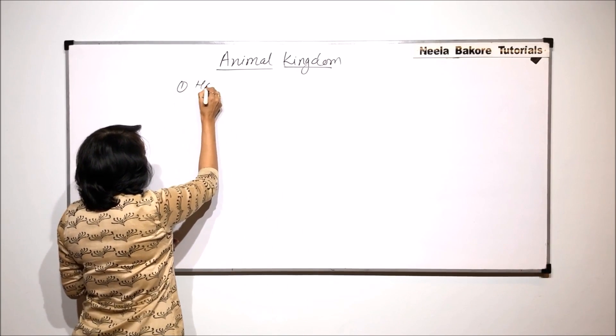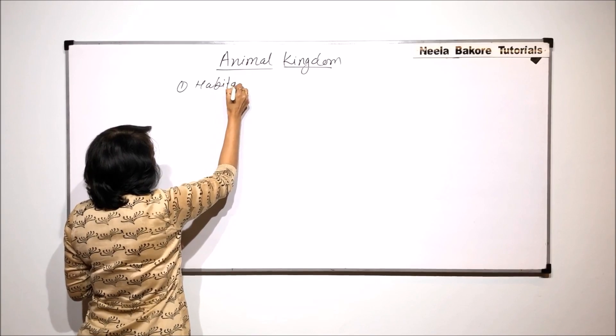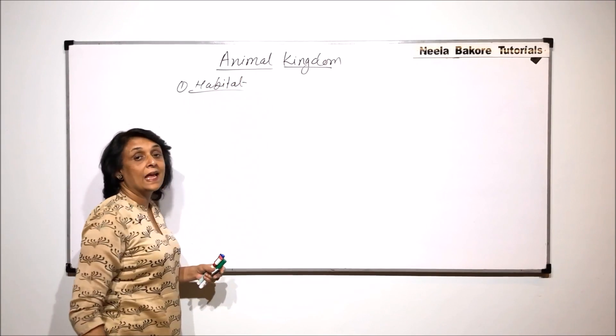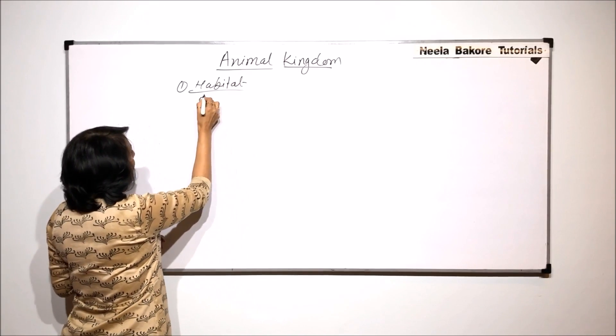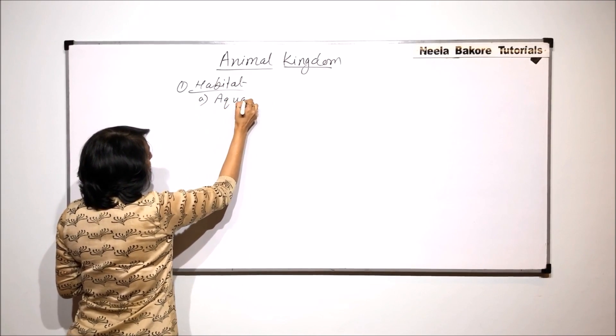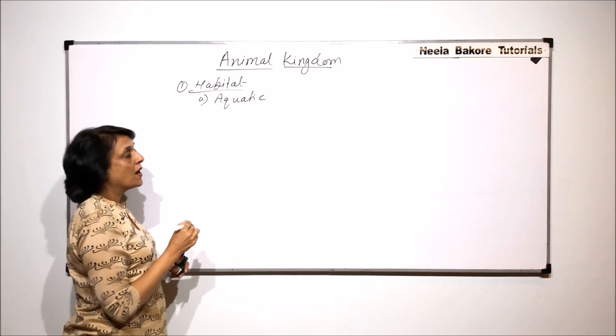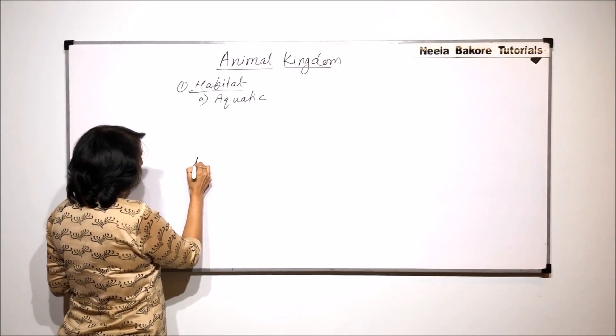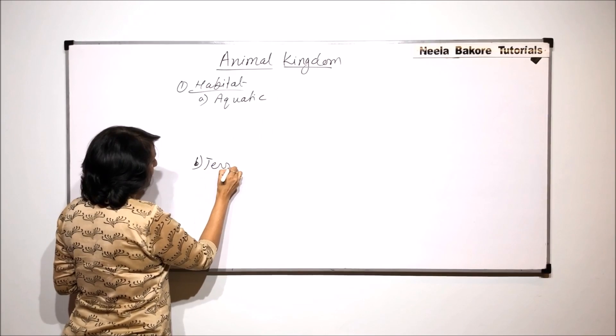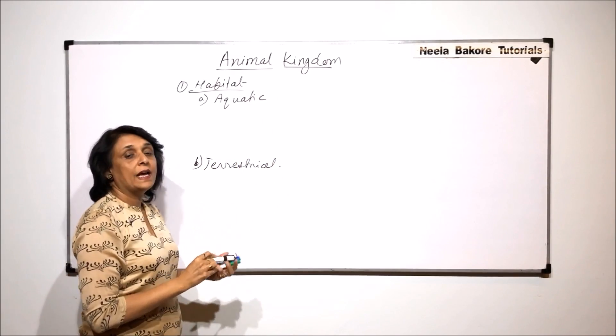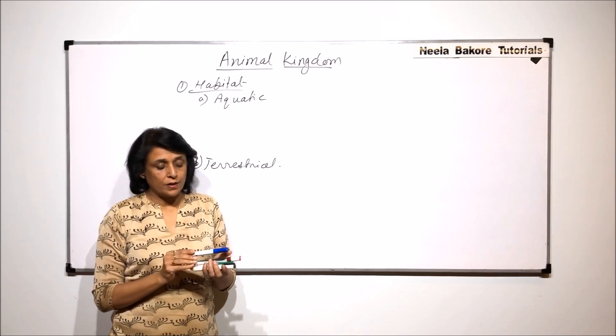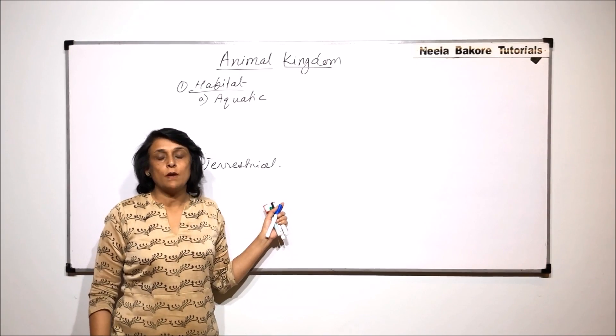So let us first talk about the habitat. Habitat means where these animals live. On the basis of habitat, we can have aquatic animals and we can have terrestrial animals. Aquatic animals are the ones which are found in water and terrestrial are the ones which are found on land.